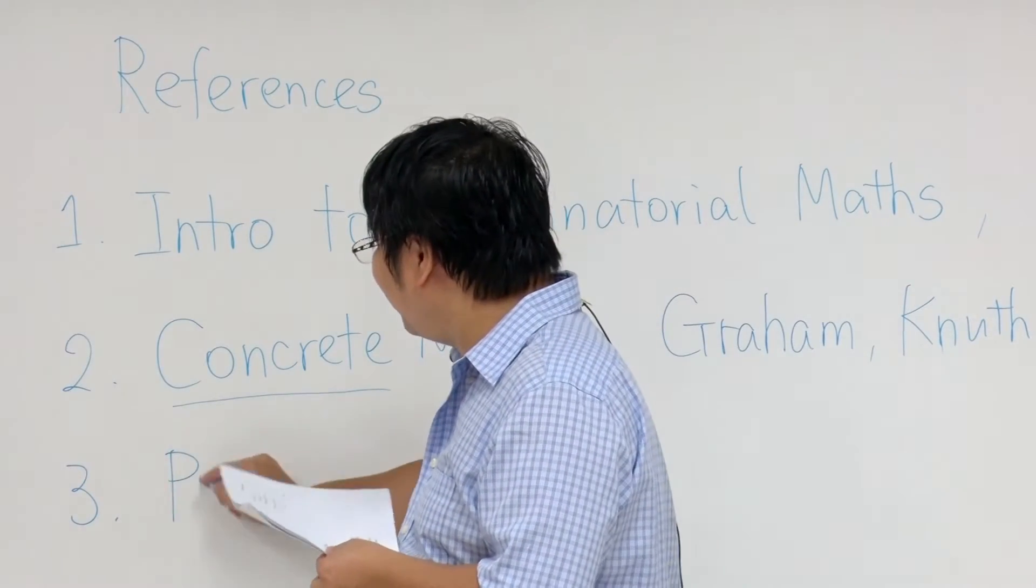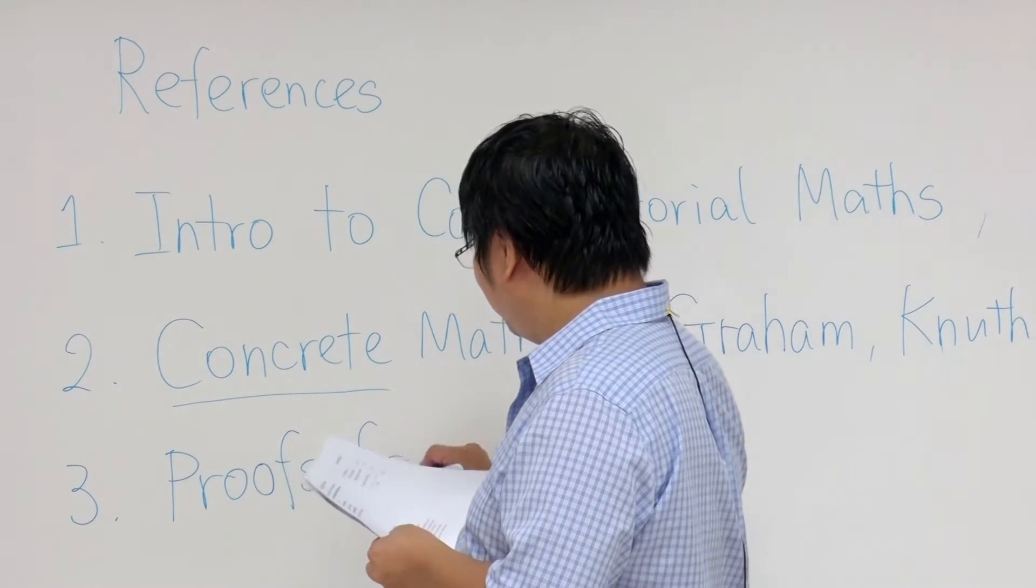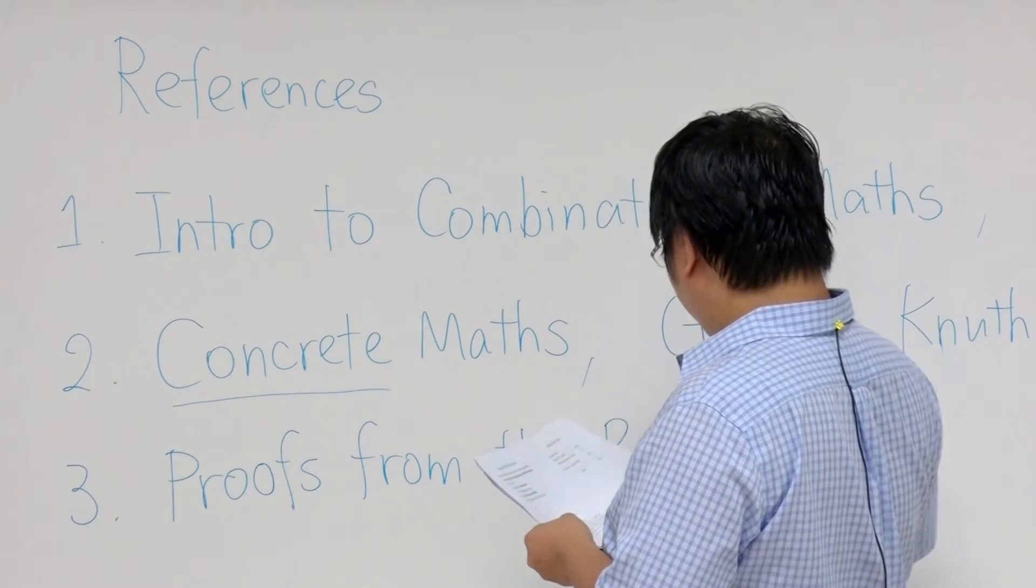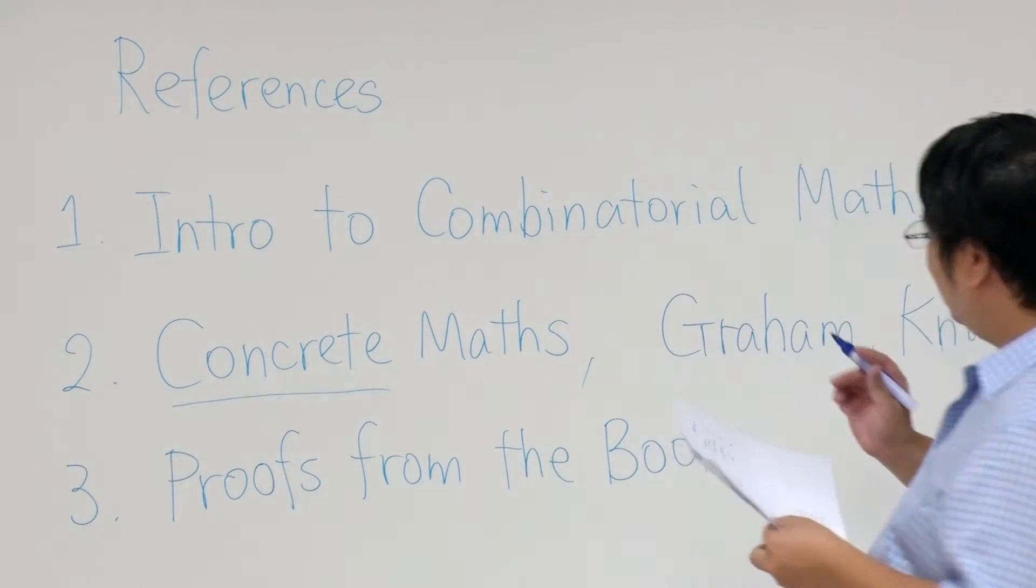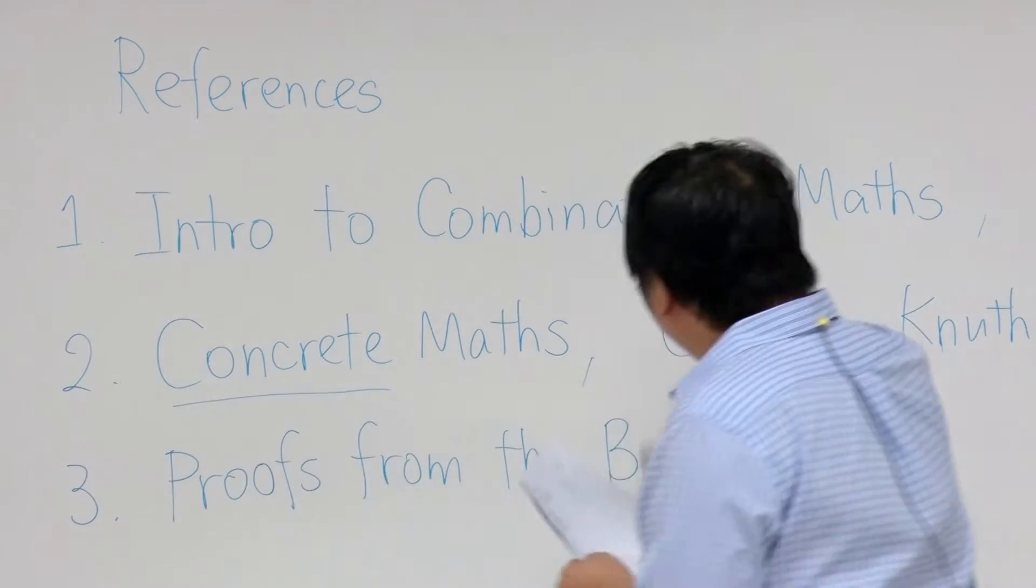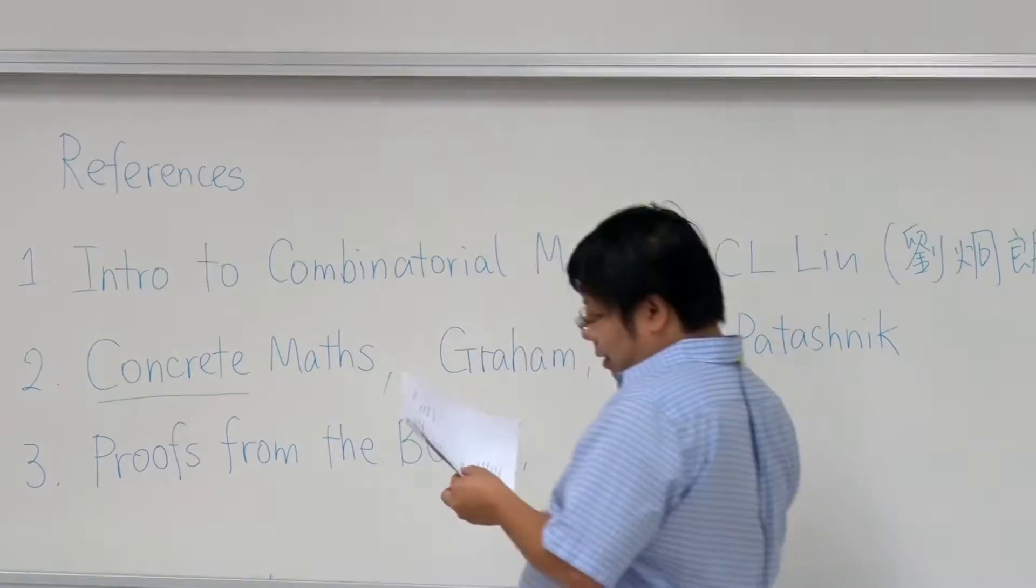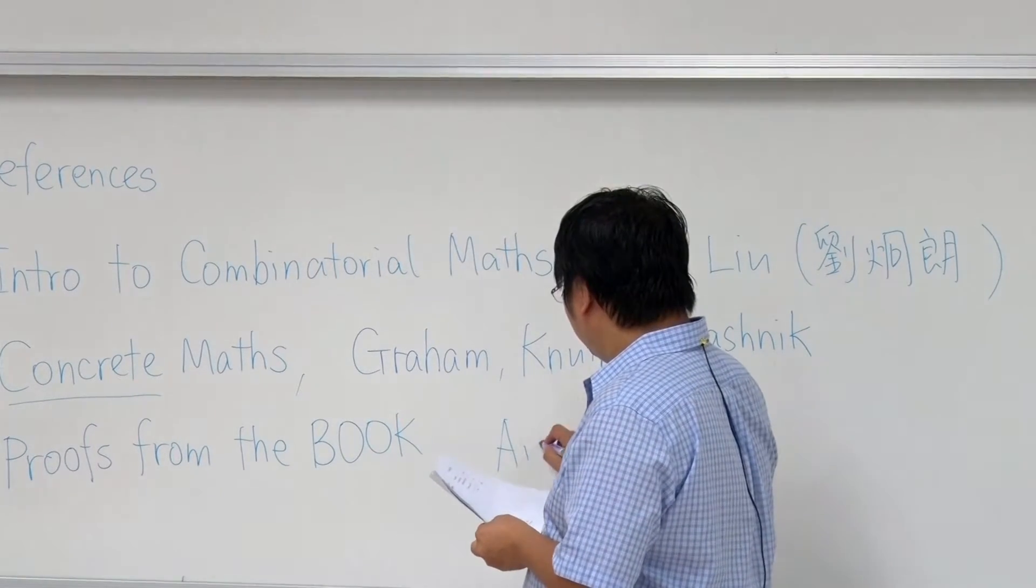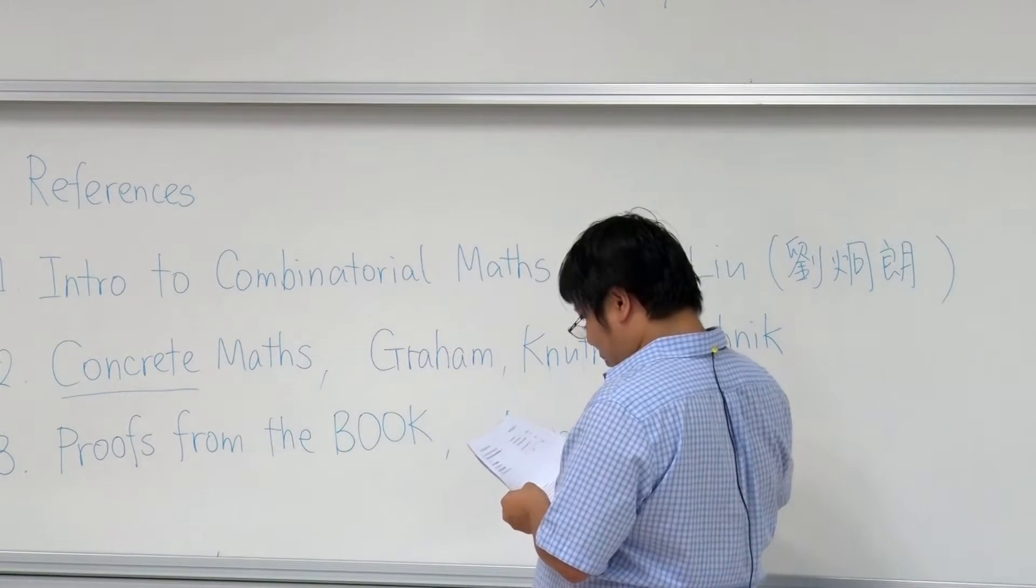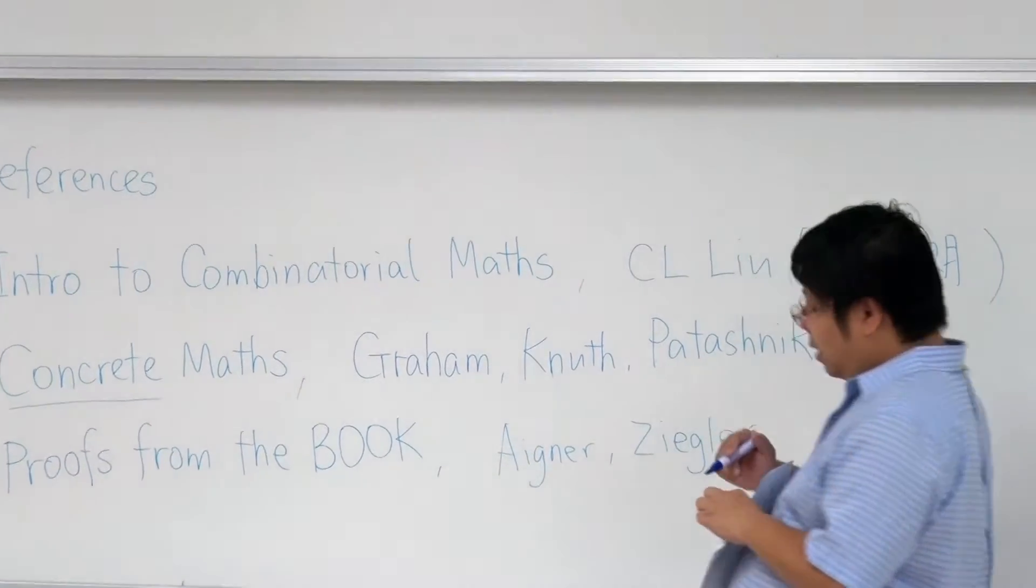The third one, this is a fun book. So this is called Proofs from the Book. I should write book in this way, B-O-O-K. There are two authors, Aichner and Ziegler.